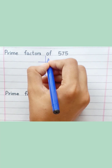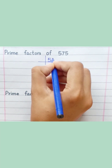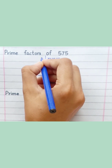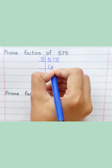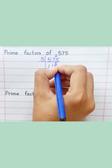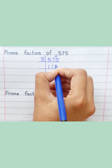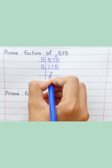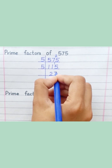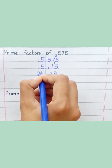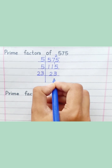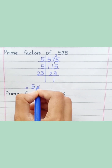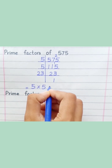Prime factors of 575. 5 ones are 5. 5 fives are 25. 5 twos are 10. 5 threes are 15. 23 ones are 23. 575 equals 5 multiply 5 multiply 23.